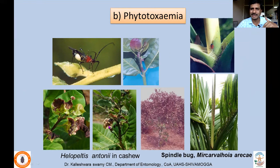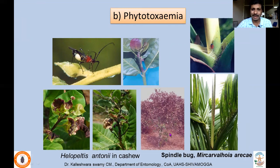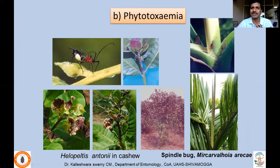Some sucking insects, while feeding, release toxic substances because their saliva contains pectinase enzyme. This saliva enters the plant tissues, causing necrosis at the site of feeding, which leads to die-back symptoms. This spreads and the entire twig, branch, or plant may dry over time — a condition called phytotoxemia, very common in yellow peltis santana tea mosquito bug in cashew, and similarly mirid pests like spindle bug.